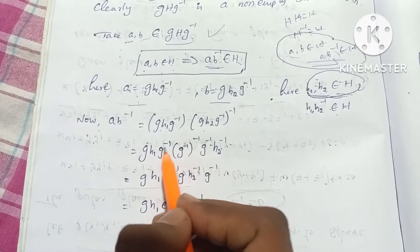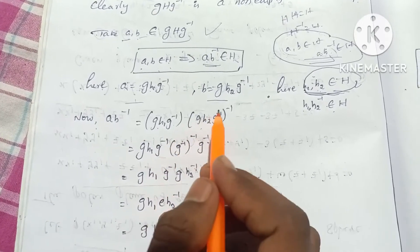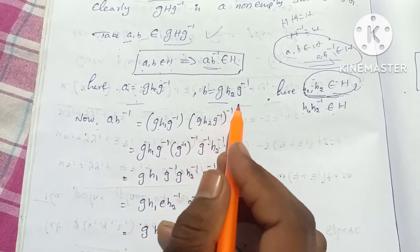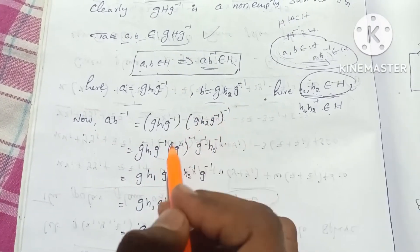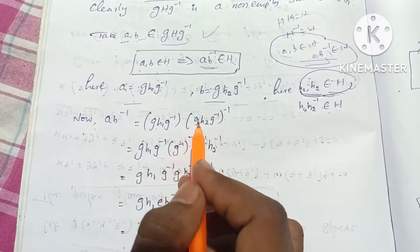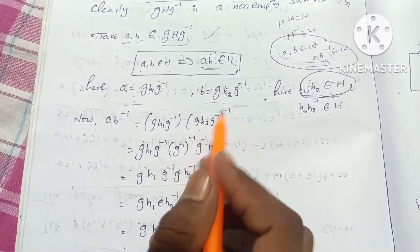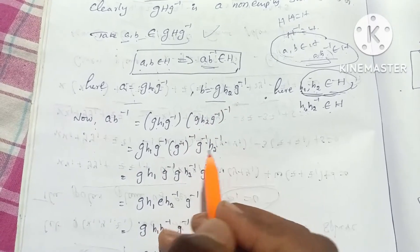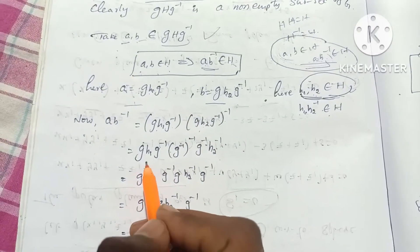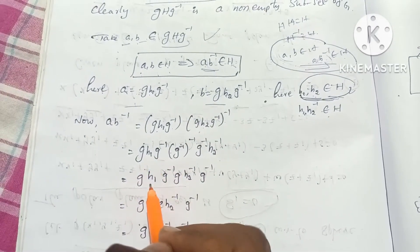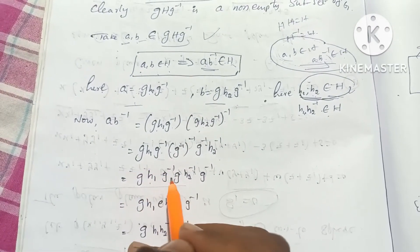That is g·H·g⁻¹ into g⁻¹ whole inverse. We will prove this value. So g·H₁·g⁻¹ into A.